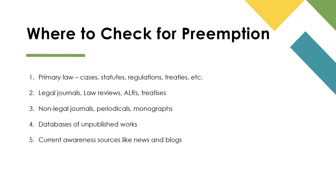To ensure that your paper topic is original and a valid issue of law, you should regularly check in with the following sources throughout the paper writing, researching, and rewriting process. You should check primary law, secondary legal literature, non-legal scholarship, forthcoming publications from legal and non-legal scholars, and current awareness sources. Although this list is organized in order of legal authority from binding to not very persuasive, remember that they're all important to look at when checking for preemption.